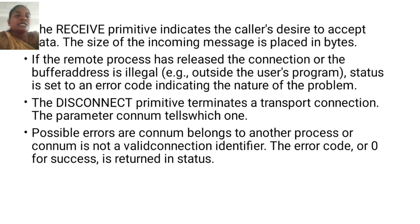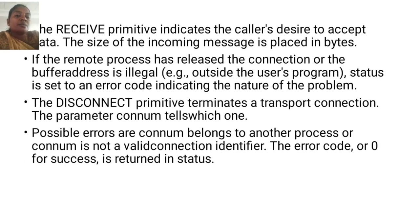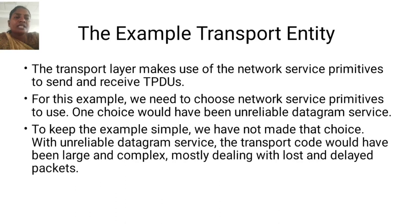If the remote process has released the connection or the buffer address is illegal — outside the user's program — status is set to an error code indicating the nature of the problem. The disconnect primitive terminates a transport connection; the parameter connection number tells which one. Possible errors are: connection number belongs to another processor, or connection number is not a valid connection identifier.